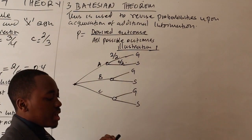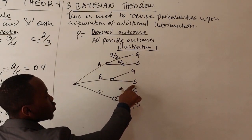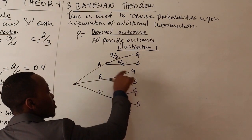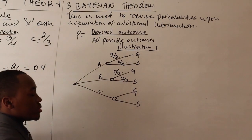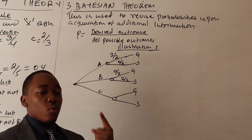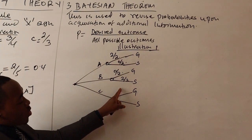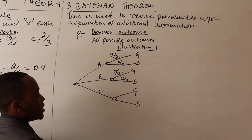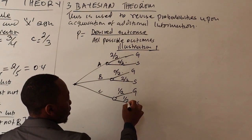Bag A has two gold coins, so probability of gold from A is 2/2 and silver is 0/2. Bag B has two silver coins, so probability of silver is 2/2 and gold is 0/2. Bag C has one gold and one silver, so probability of gold is 1/2 and silver is 1/2.